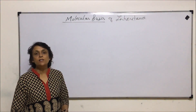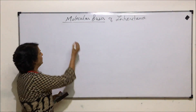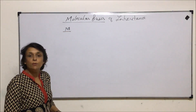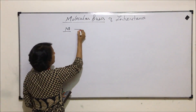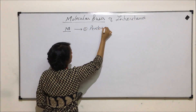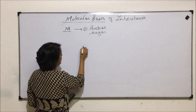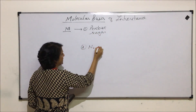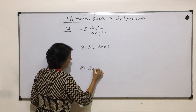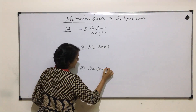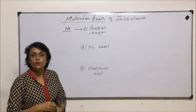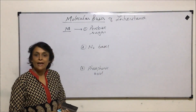Let us talk about what these nucleic acids are made up of. Nucleic acids are polymers of nucleotides and they are made up of: one, pentose sugar; two, nitrogen bases; and three, phosphoric acid. Now let us talk about these three components of the nucleic acids.